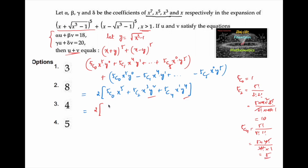So the expression becomes 2 times [x⁵ + 10·x³·y² + 5·x·y⁴]. Since y = √(x³-1), we substitute: y² = x³ - 1, and y⁴ = (x³ - 1)².